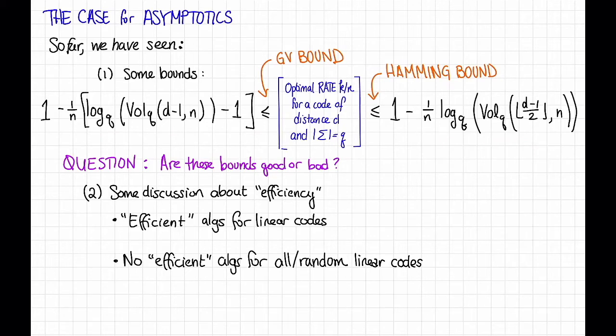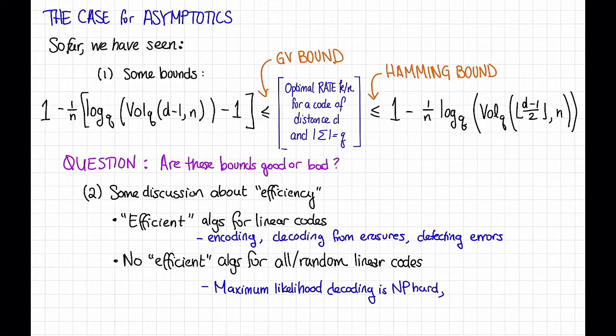But a second thing that we have seen is some discussion about efficiency. We saw that there are some efficient algorithms for linear codes, like encoding, decoding from erasures, or detecting errors. And we also saw that there are unlikely to be efficient algorithms for all linear codes or for random linear codes. That is, we saw that maximum likelihood decoding is NP-hard. And we also saw the McEliece cryptosystem, which assumed that decoding a random linear code was computationally difficult.